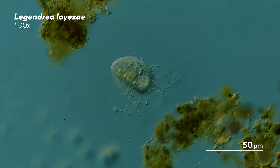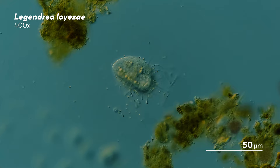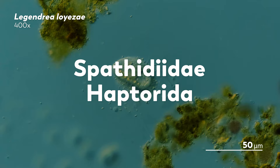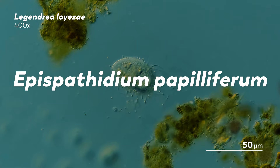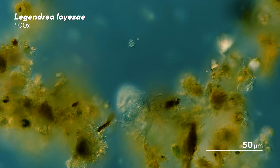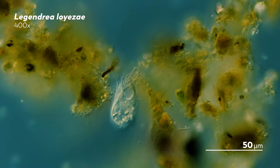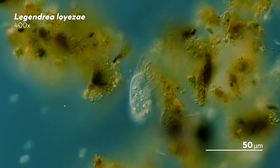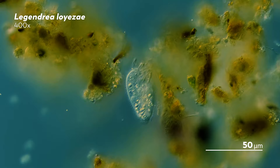With his prized DNA, James was able to find a family for the Legendrea loyazae: the family Spathididae, order Haptorida. He was even able to find a sibling, Epispathidium papilliferum. They even have similar protruding structures, making their family resemblance apparently beyond the genetic similarities. This is a relationship that the early observers of Legendrea loyazae might not have been able to infer, and even if they did, the tools to verify them didn't exist.